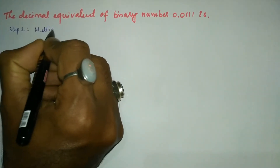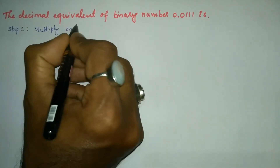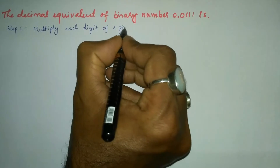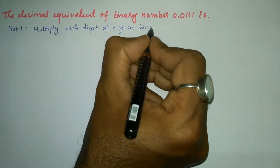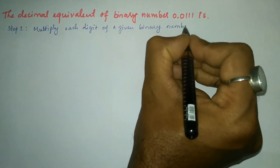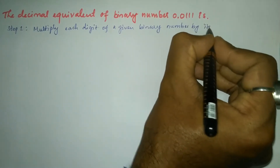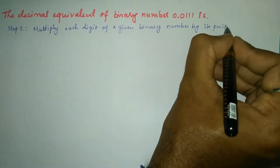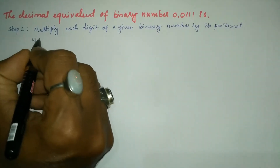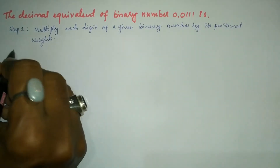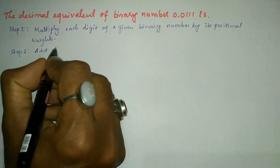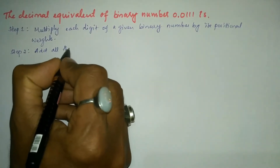Step one: multiply each digit of the given binary number by its positional weight. Step two: add all the products.